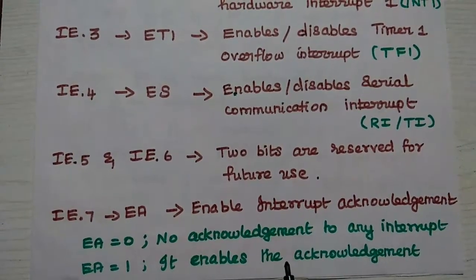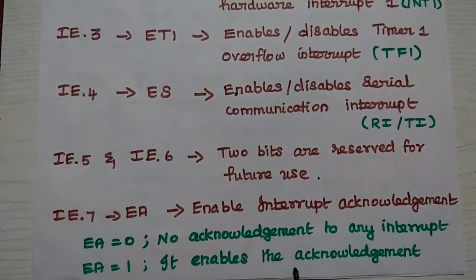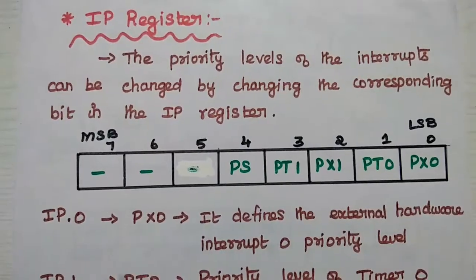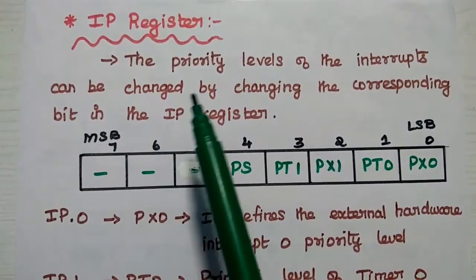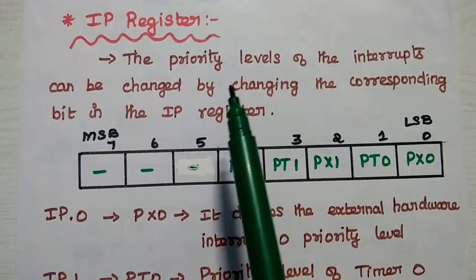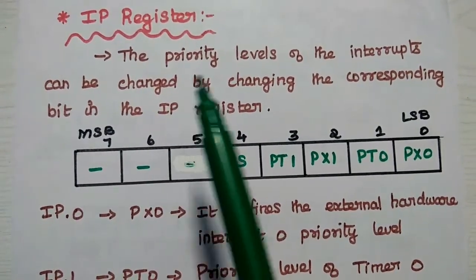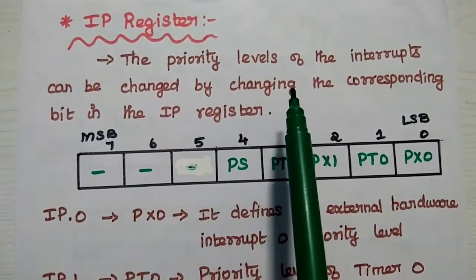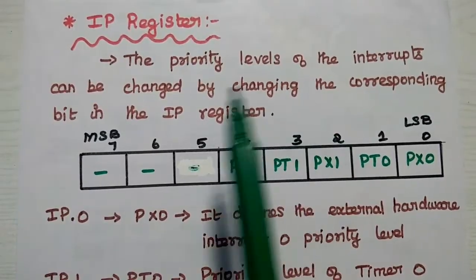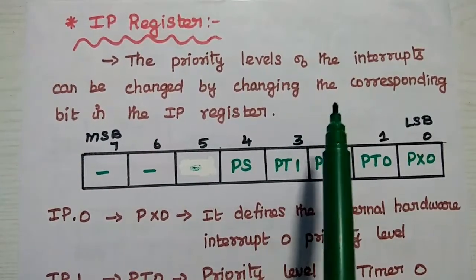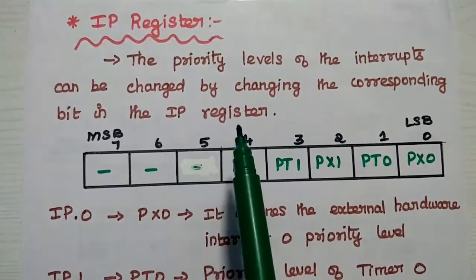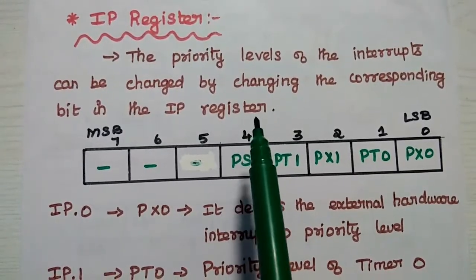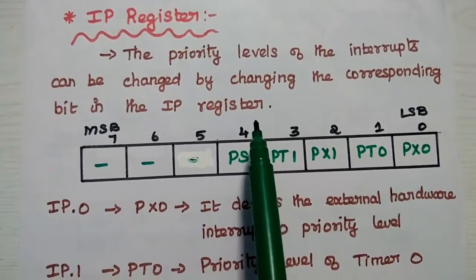This IE register is very important to enable or disable the interrupt request. The next one is the IP register, that is the interrupt priority register. The priority levels of the interrupts can be changed by changing the corresponding bit in the IP register. It is used to change the priority levels of the interrupts.